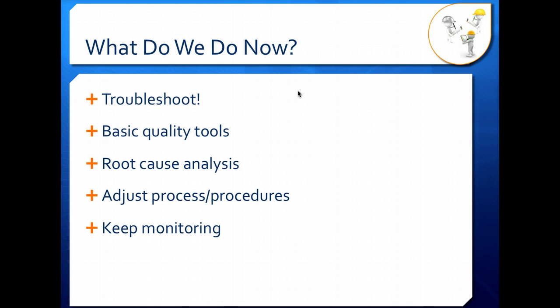Then once you do that, you adjust your process, keeping in mind that this may cause a jump or shift on your control chart, to improve the consistency of your process. So you're trying to reduce variation, get your process back into control.